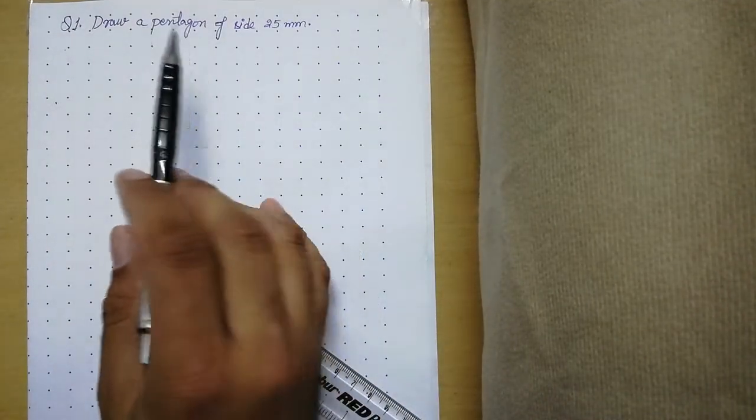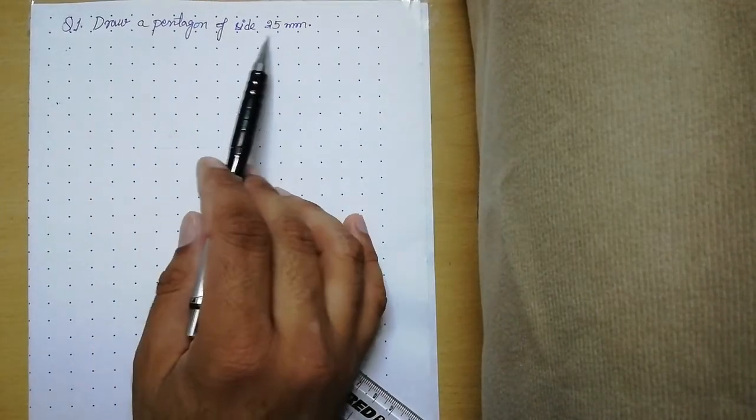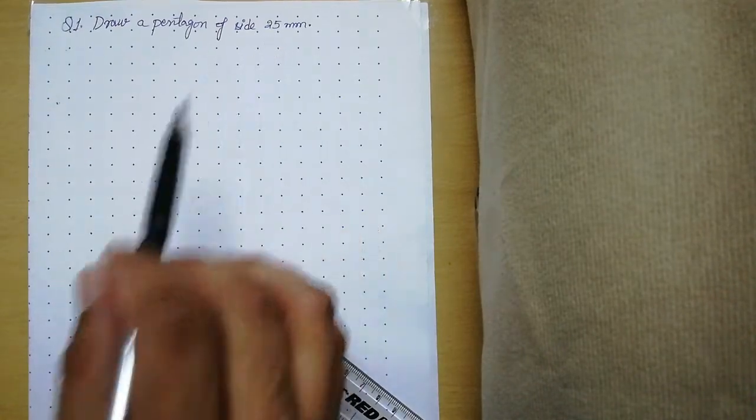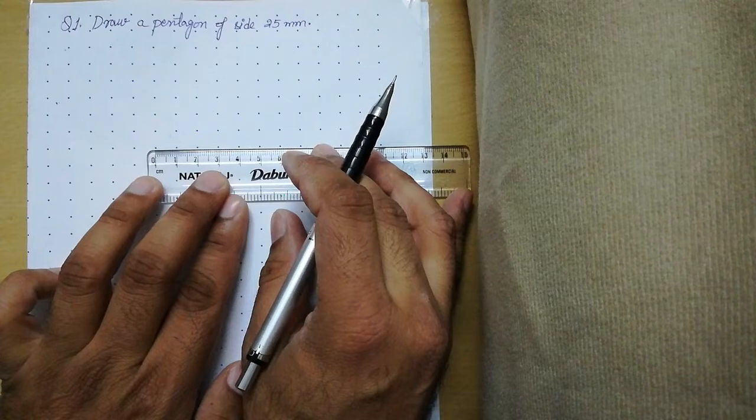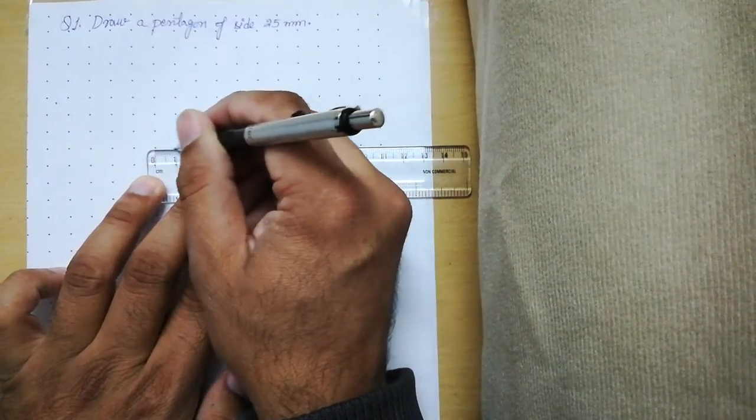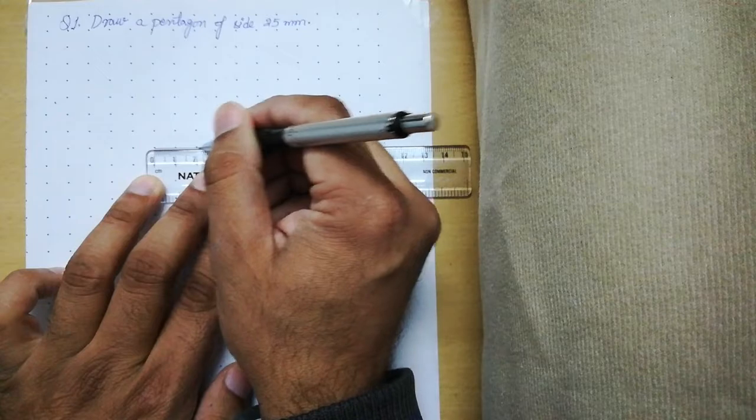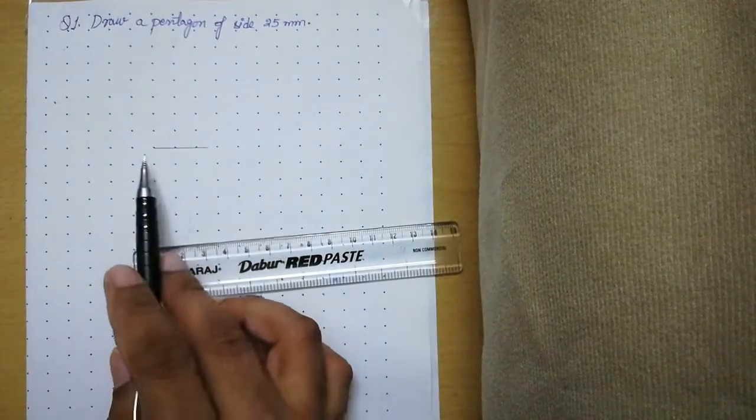Hello students, today we will learn how to draw a pentagon of side 25 mm. Let us quickly see the procedure. First, we will align our scale with this grid and draw a line of 25 millimeters with the help of the scale.